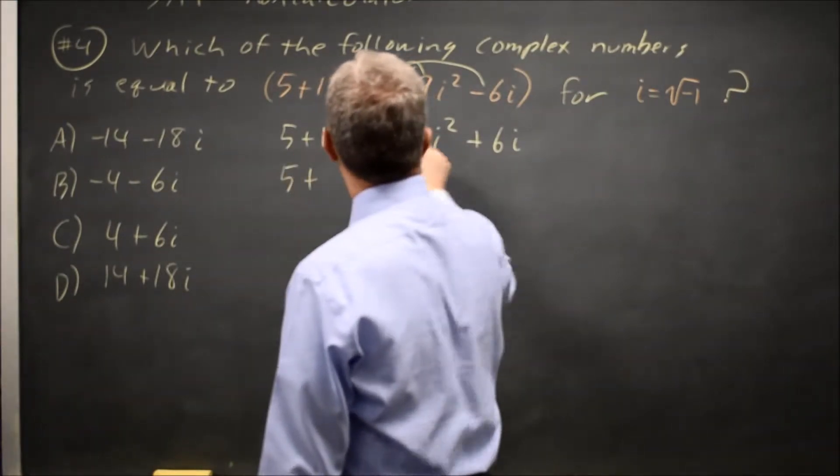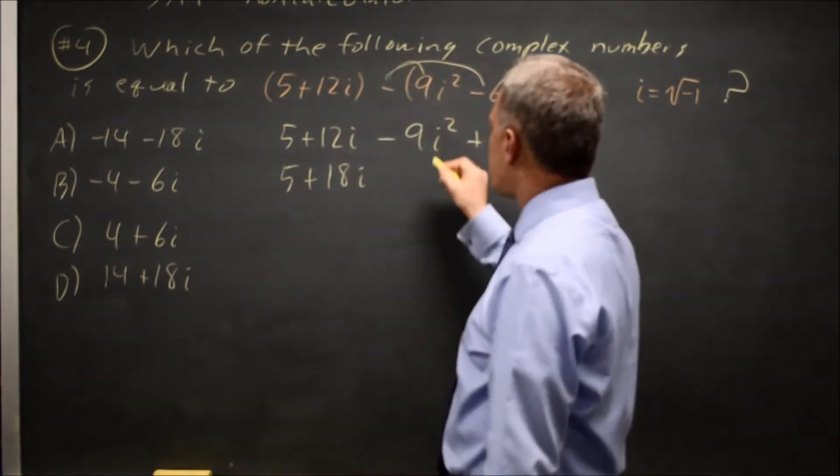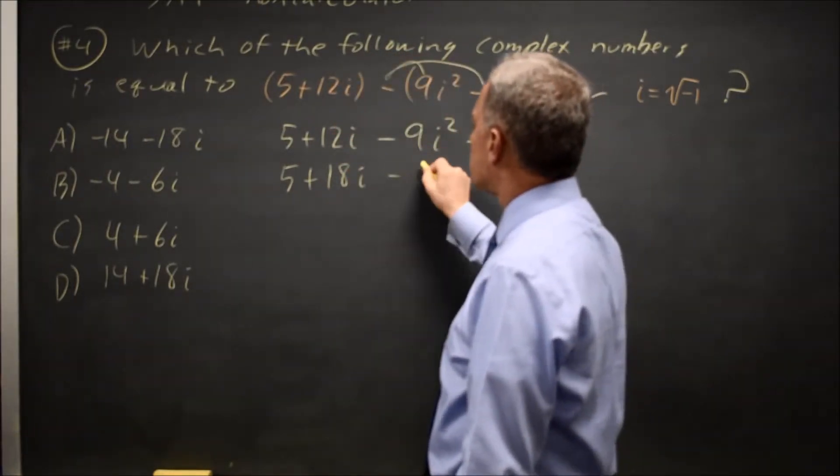That's five plus twelve i plus six i is eighteen i. And then negative nine i squared is minus nine.